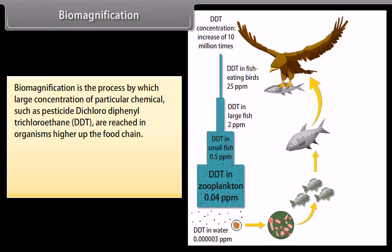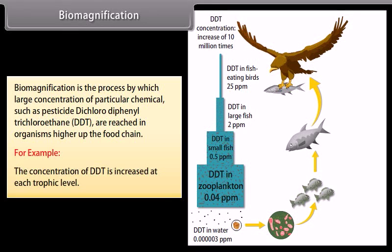Biomagnification is the process by which large concentrations of a particular chemical — such as the pesticide dichlorodiphenyltrichloroethane (DDT) — are raised in organisms higher up the food chain. For example, the concentration of DDT increases at each trophic level, as shown in the diagram.